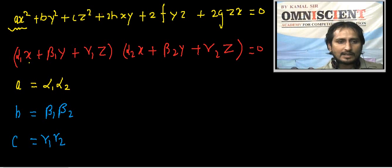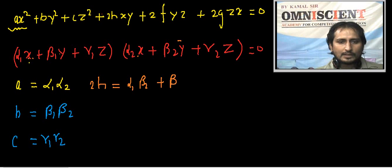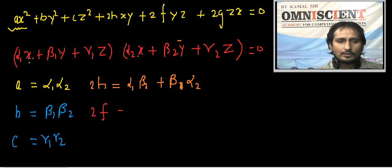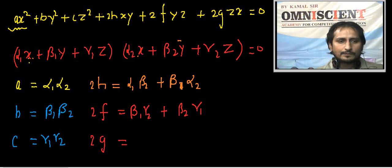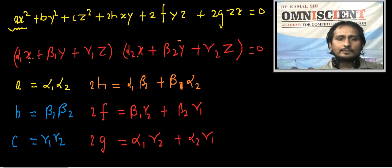xy का coefficient: 2h = α₁β₂ + α₂β₁. yz का coefficient: 2f = β₁γ₂ + β₂γ₁. zx का coefficient: 2g = α₁γ₂ + α₂γ₁. तो upon में जो था: α₁α₂ + β₁β₂ + γ₁γ₂ = a + b + c - कम से कम यह tension तो हट गई।